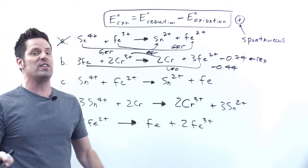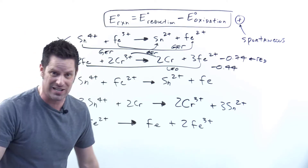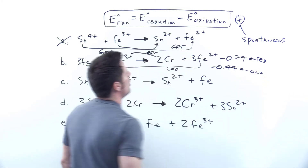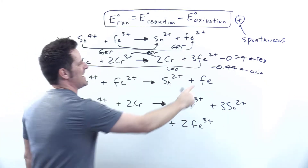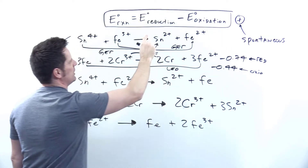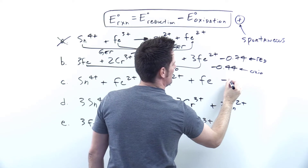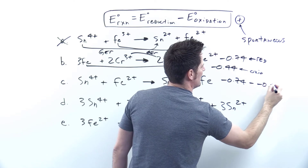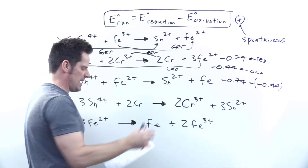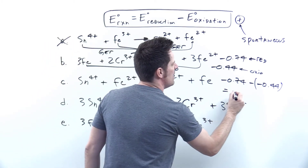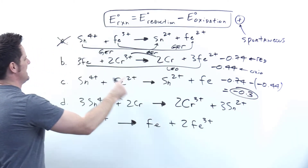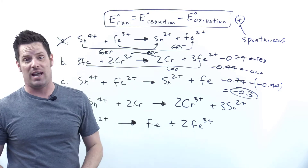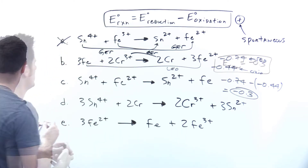Coefficients don't affect the math at all for reduction potentials. For reaction B, E_reaction equals negative 0.74 (reduction) minus negative 0.44 (oxidation), giving a final answer of negative 0.30. Since it's negative, reaction B is not spontaneous as written.